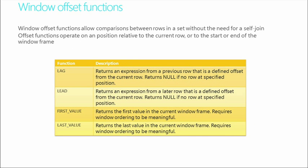The Windows offset functions: lag returns an expression from a previous row defined by the offset from the current row. Lead returns an expression from a later row instead of a previous row. First value and last value — pretty self-explanatory — returns the first value or the last value in the current Windows frame. Let me go ahead and demo this a little bit, because this is one of those things where you need to get into a Zen place, and then you'll be happy. It's one of these super useful functions.